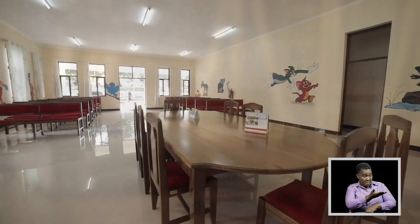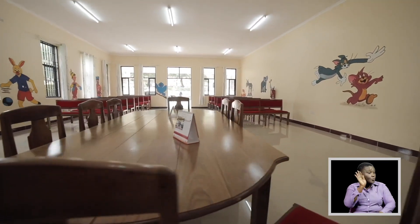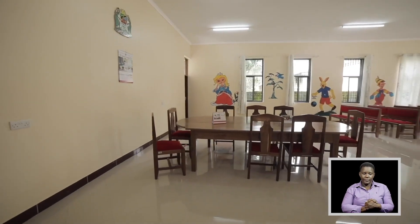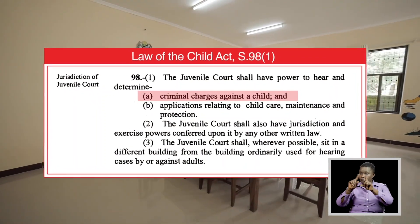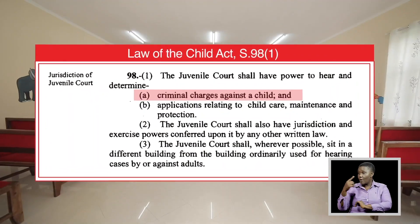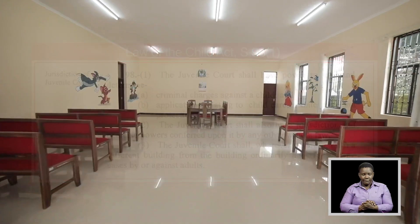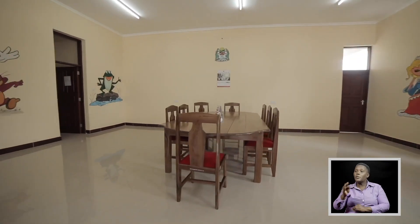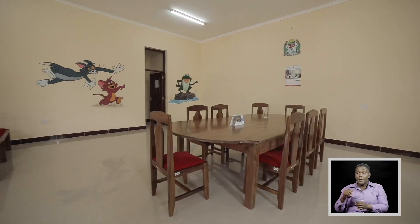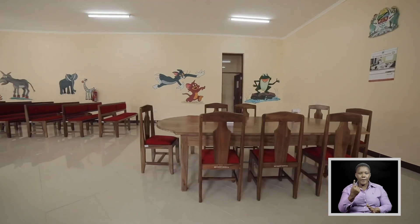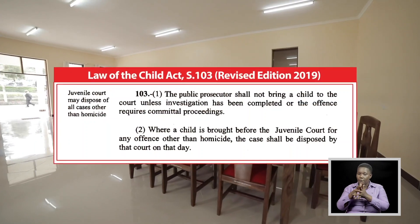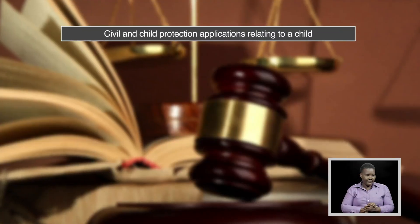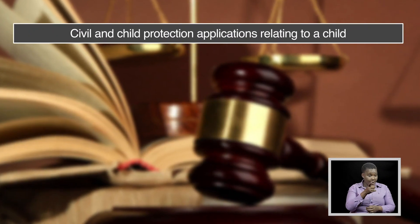The juvenile court has jurisdiction over criminal cases against a child over the minimum age of criminal responsibility, as provided under Section 98, Subsection 1A of the Law of the Child Act. The juvenile court also has jurisdiction over committal proceedings in relation to offences for which the High Court has original jurisdiction, according to Section 103 of the Law of the Child Act, Cap 13, Revised Edition of 2019.